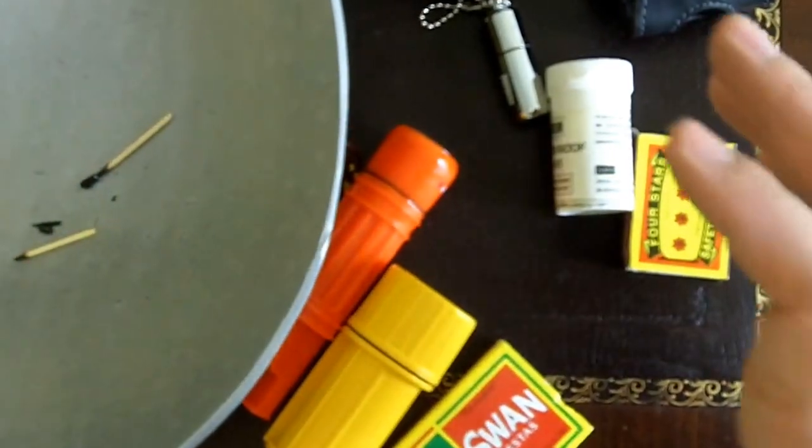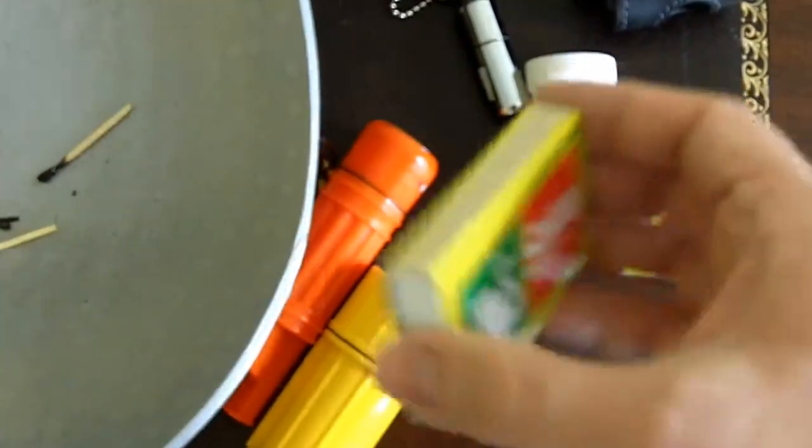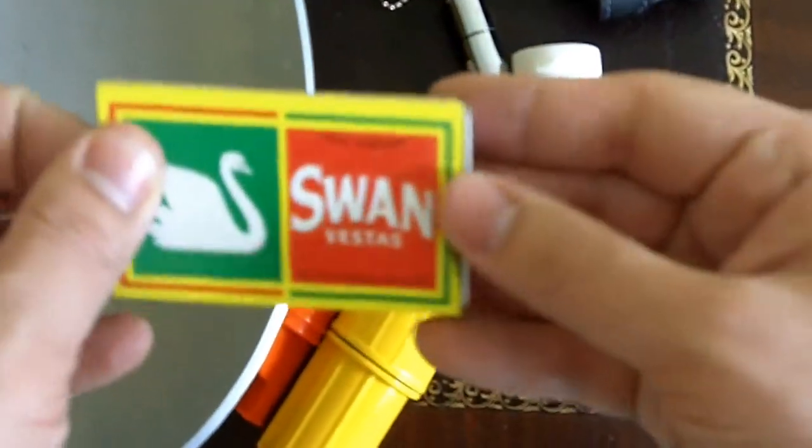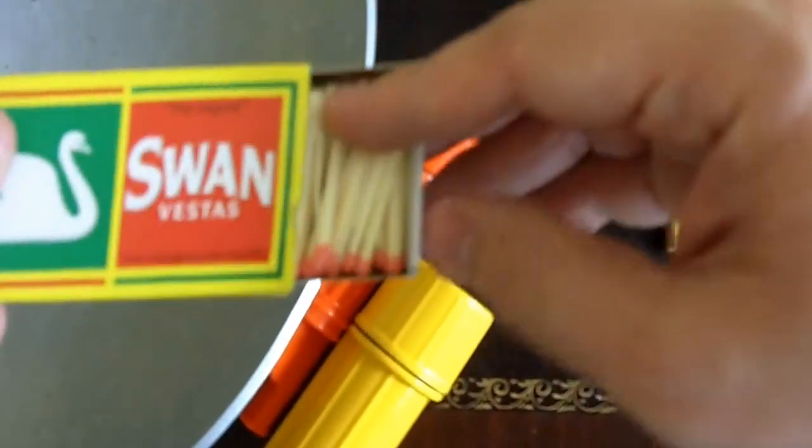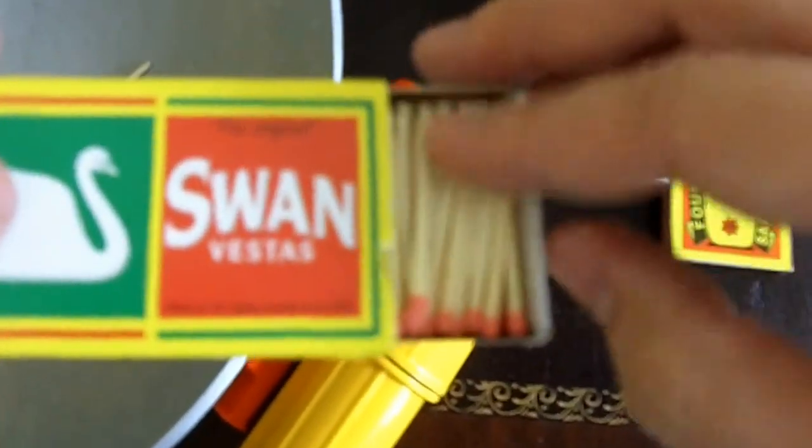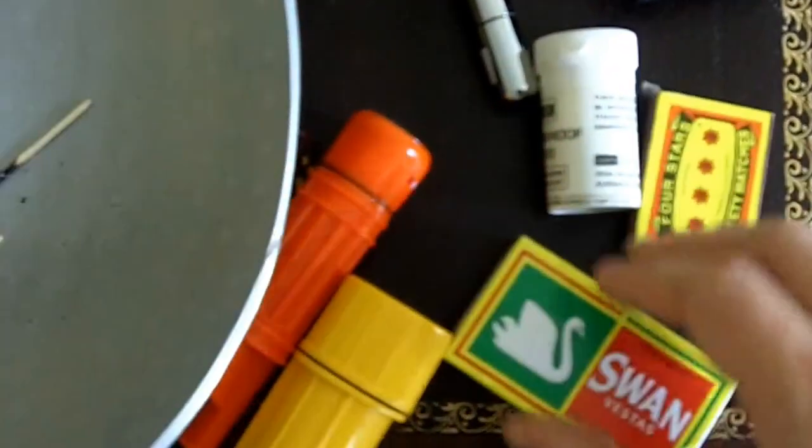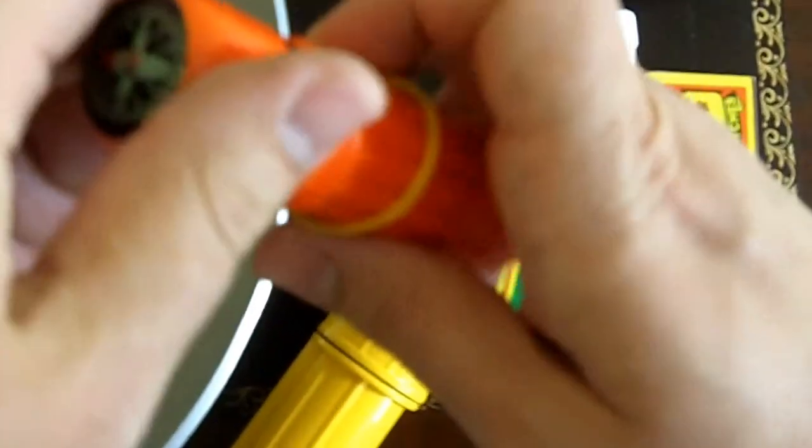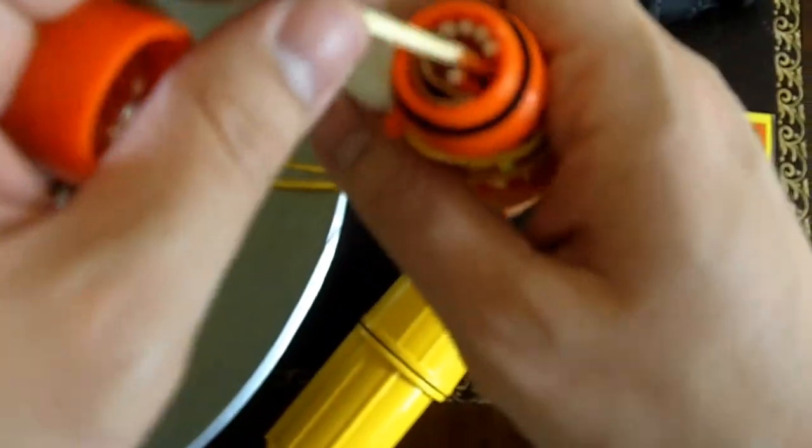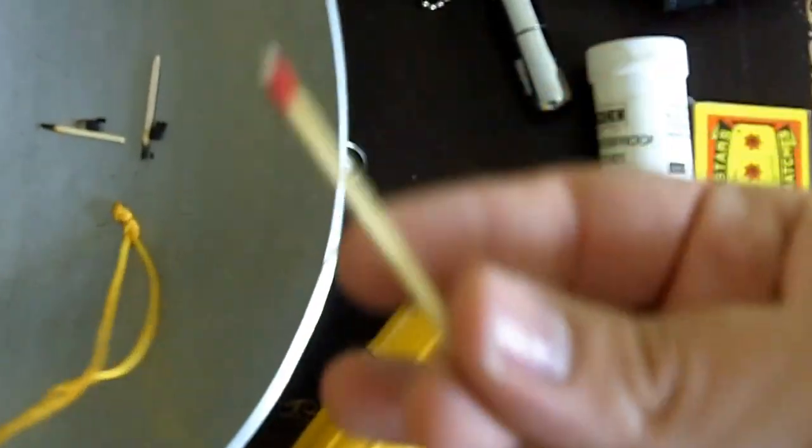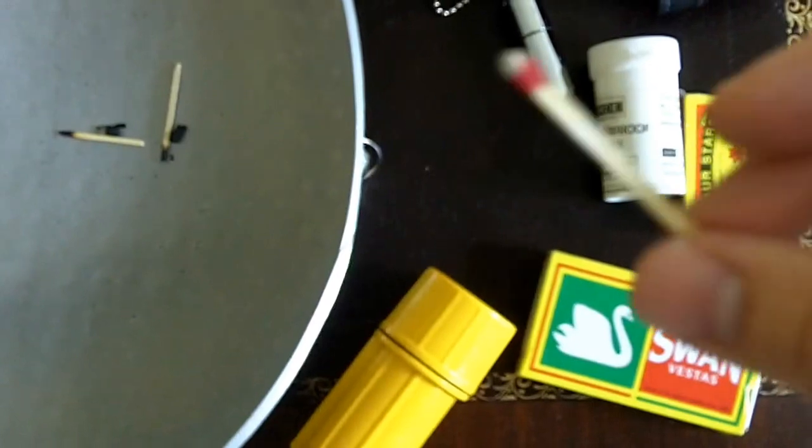What I like is strike anywhere matches, such as these ones. These are the Swan Vestas matches. These are made in Sweden. These are the more commonly available strike anywhere matches found in U.S., the Blue Diamond matches.